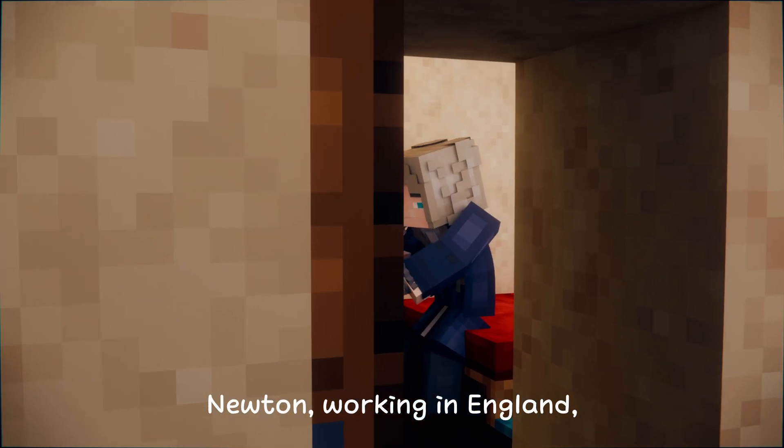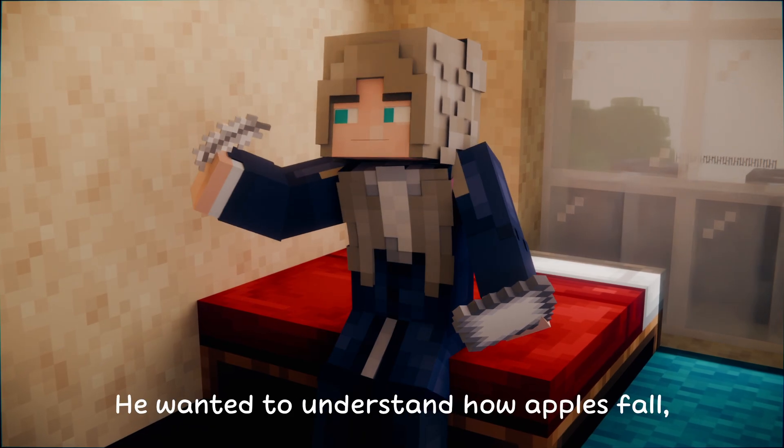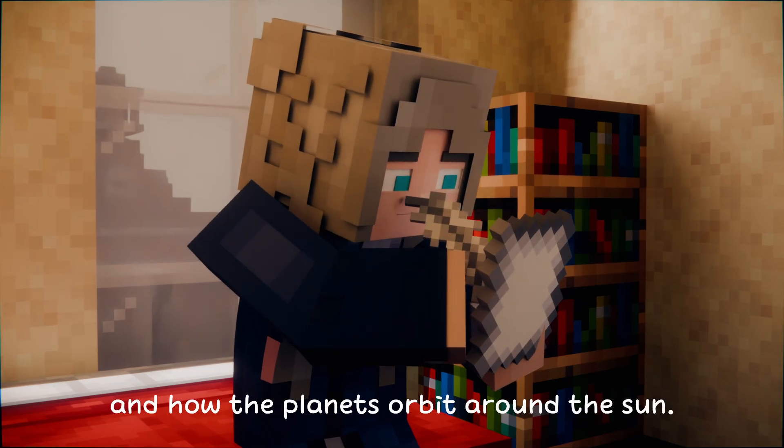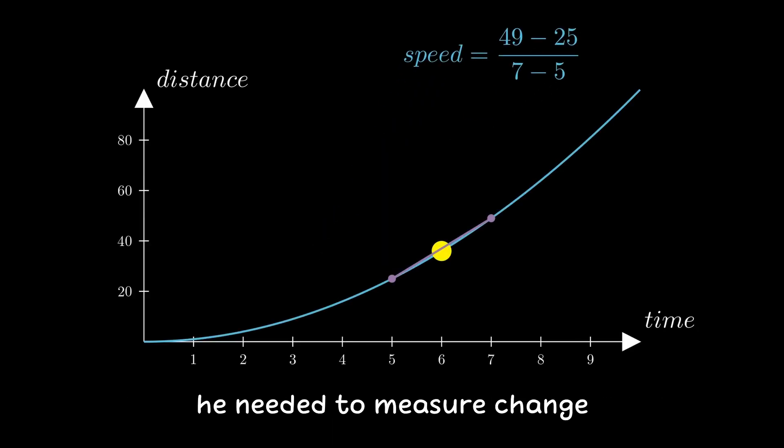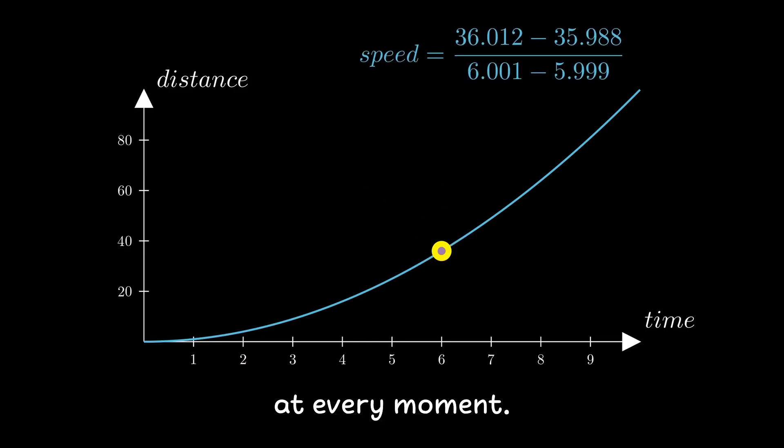Newton, working in England, was fascinated by motion. He wanted to understand how apples fall, how the moon orbits the earth, and how the planets orbit around the sun. To do this, he needed to measure change. How fast, how far, how much, at every moment.